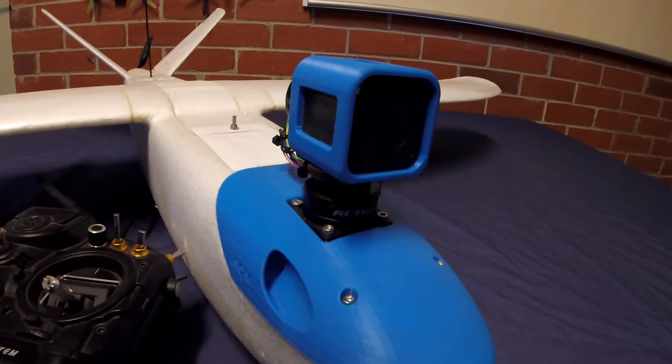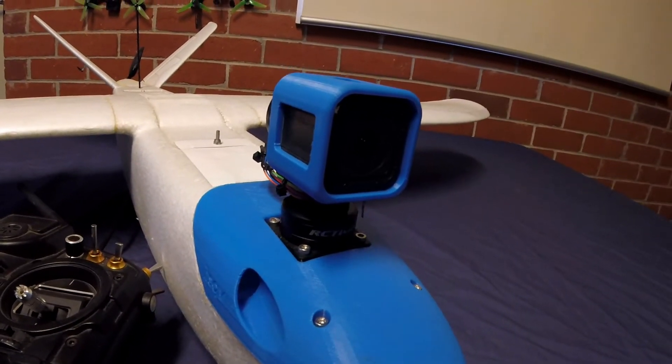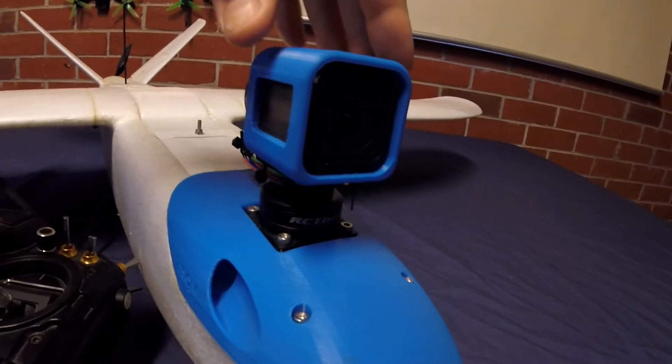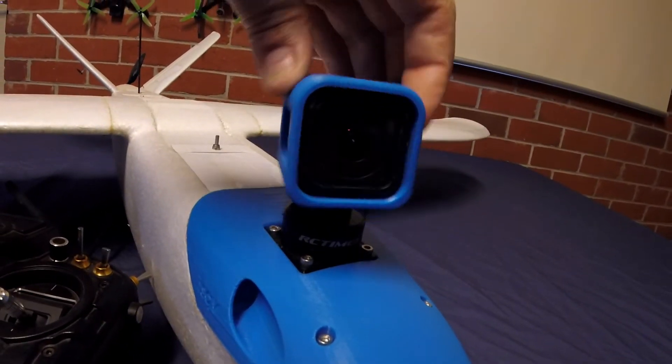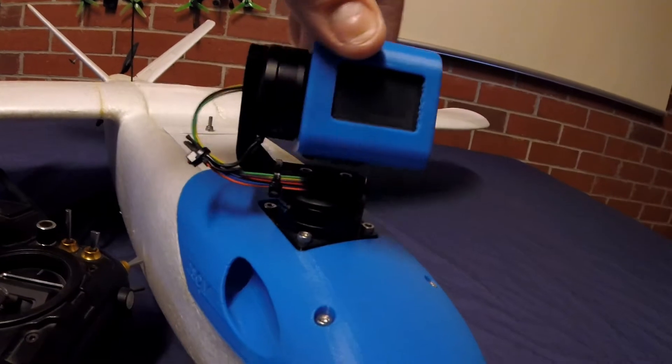Hey guys, Stuntdouble here. This is my new gimbal setup for the Mini Talon. This is a two-axis design. It's got a roll motor and it's got a pan motor too.